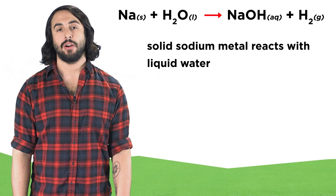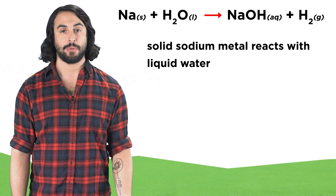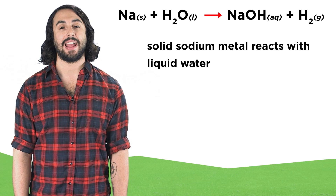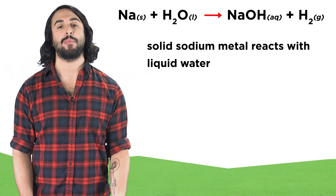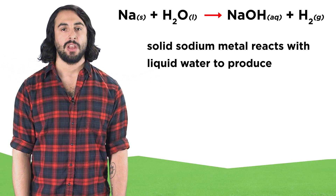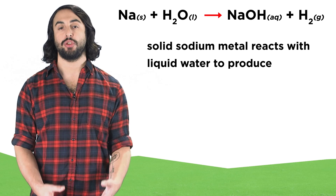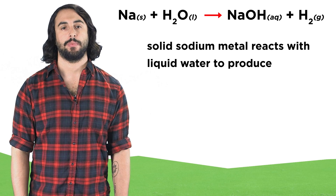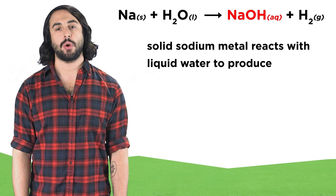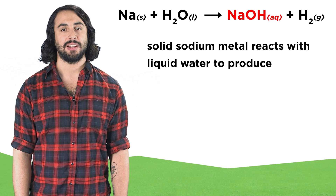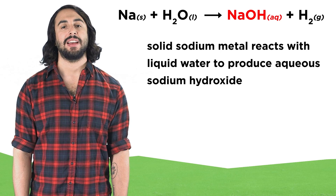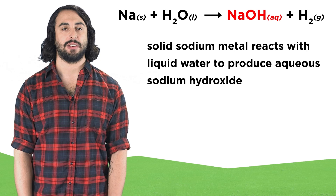Now the forward arrow separates the reactants from the products, so we need words that indicate that a chemical reaction has occurred. So let's say: to produce. And now we list the products. NaOH is sodium hydroxide, and it's in the aqueous phase, so we write aqueous sodium hydroxide.